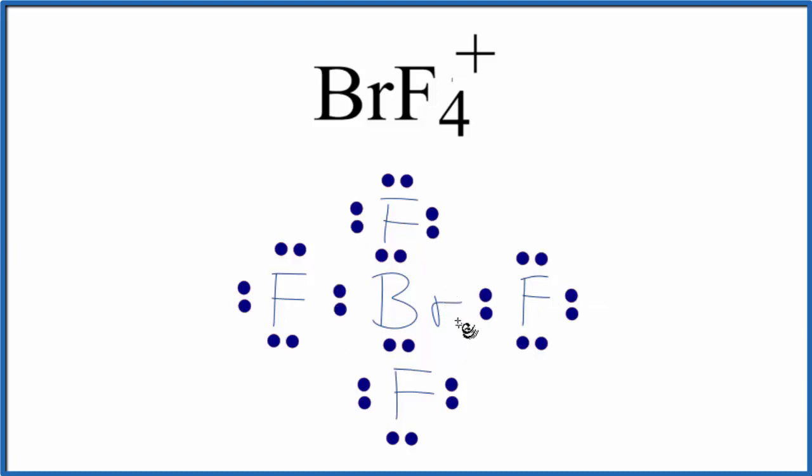For elements like bromine in period 3 or higher, they can have expanded octets. So we can place that last pair of electrons right here on the bromine. So now the bromine does have 10 valence electrons around it, an expanded octet. But that's okay. Bromine is an exception to the octet rule. We can have 10 around it.